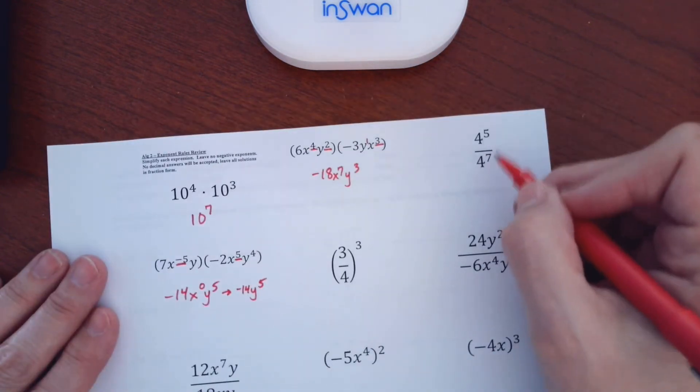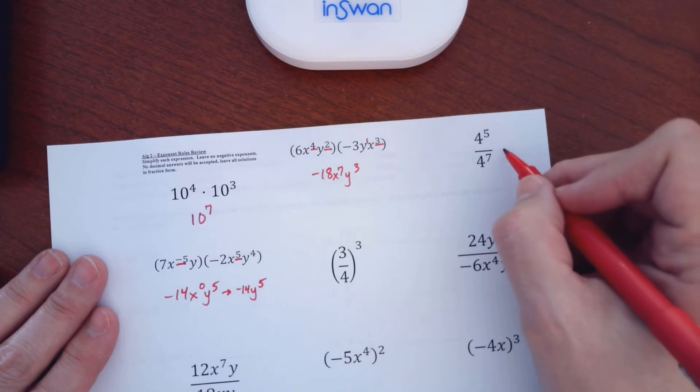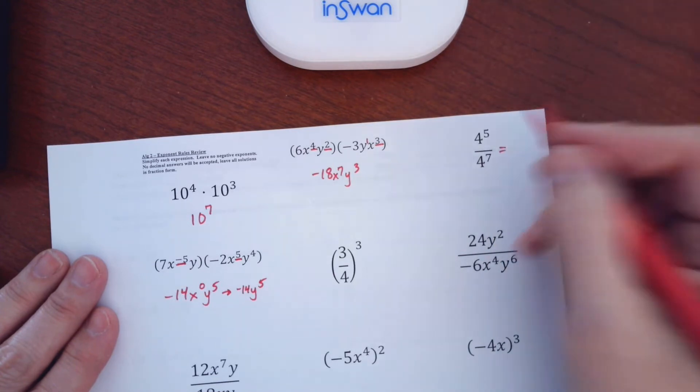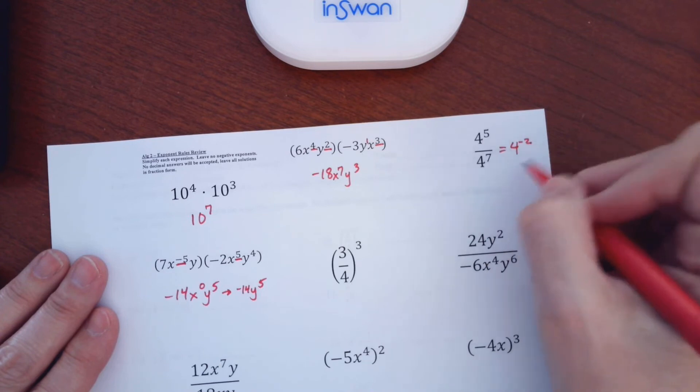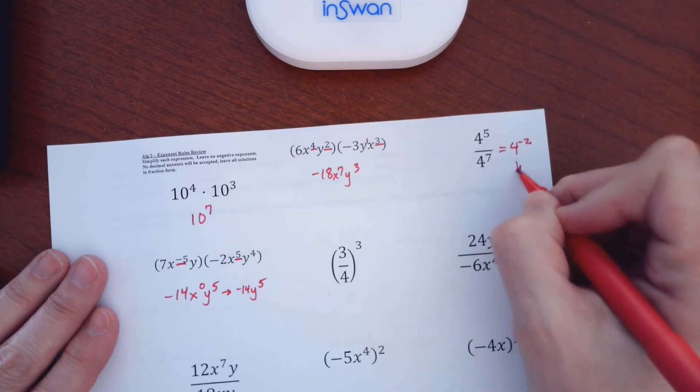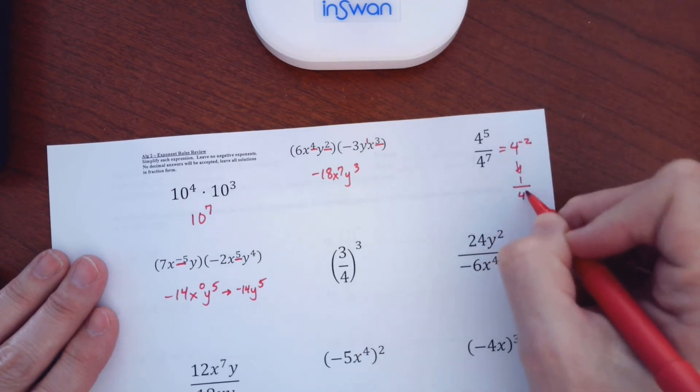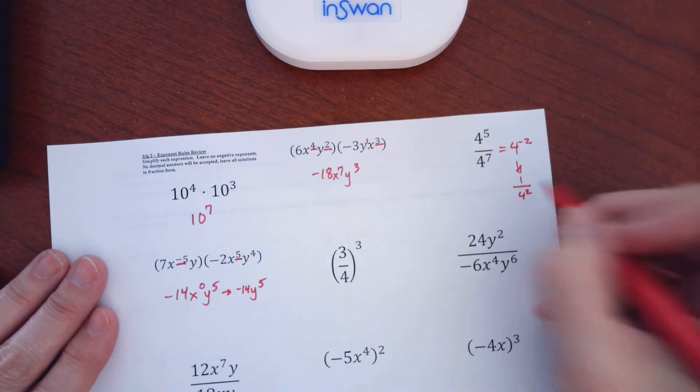Over here, 5 and 7. I'm dividing, so I subtract. So if I actually follow the rules, this would be 4, 5 minus 7 is negative 2. Well, I shouldn't leave a negative exponent, so I should rewrite this as 1 over 4 squared. Well, 4 squared is 16, so 1 over 16.